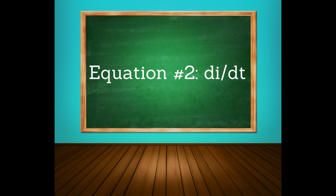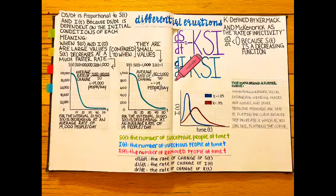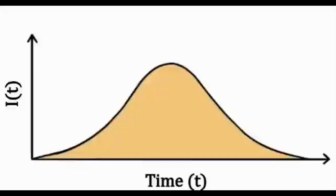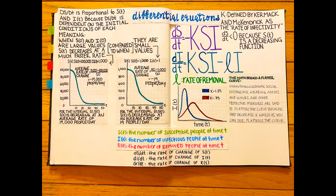The second equation, di/dt, has two terms because i(t) increases as susceptible people become infected and decreases as infected people are removed. The first term is positive k·s·i because i(t) increases at the same rate s(t) decreases. The second term is where the second parameter, l, is introduced. Since i(t) is decreasing as people are removed and because di/dt is dependent on i(t), the second term is negative l times i.